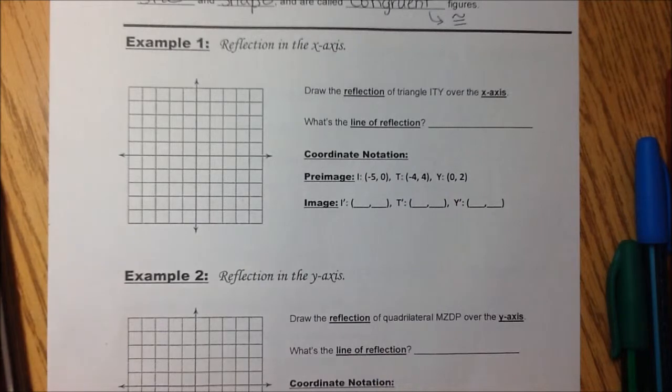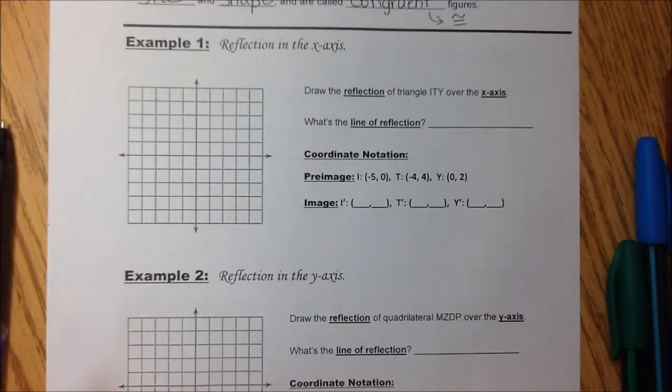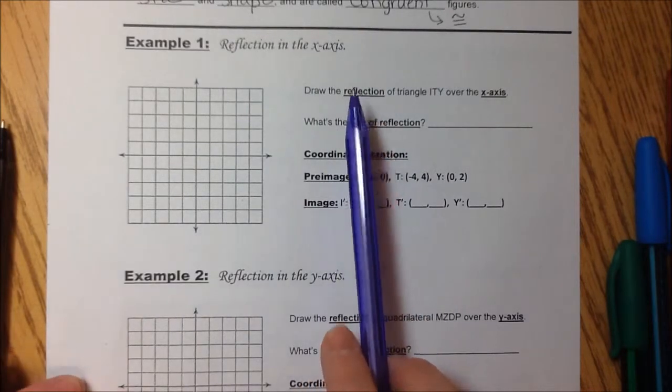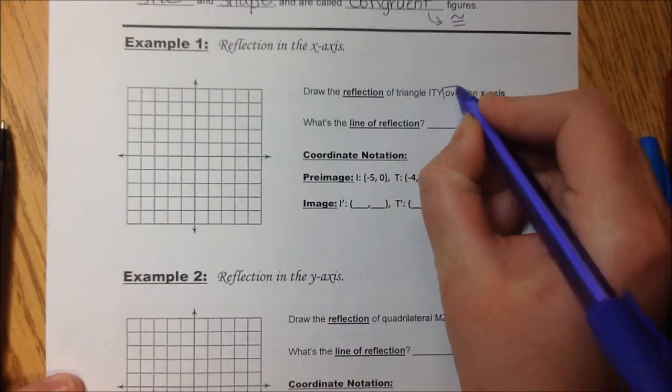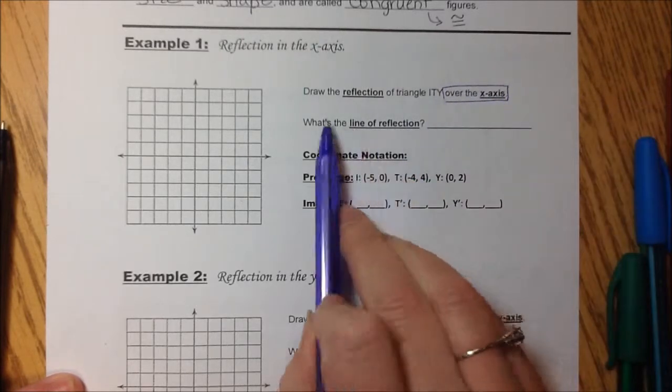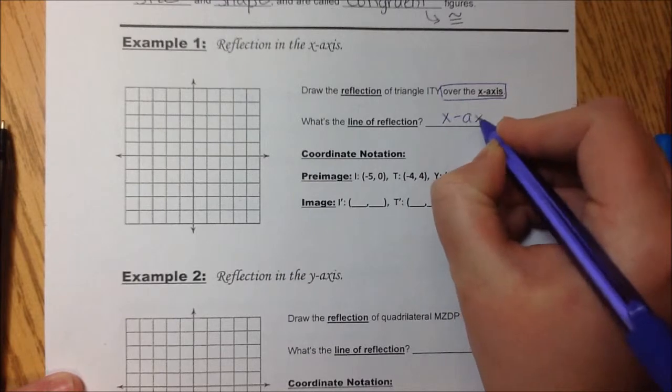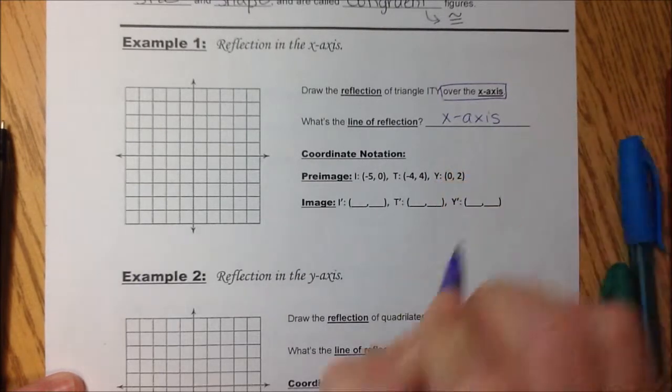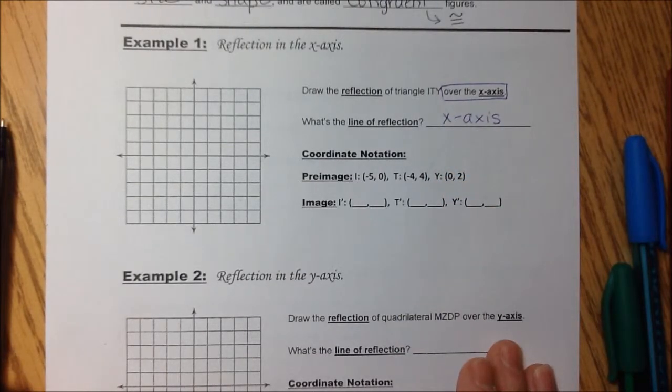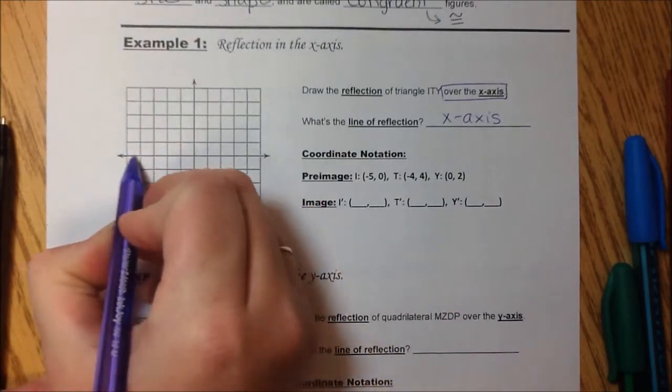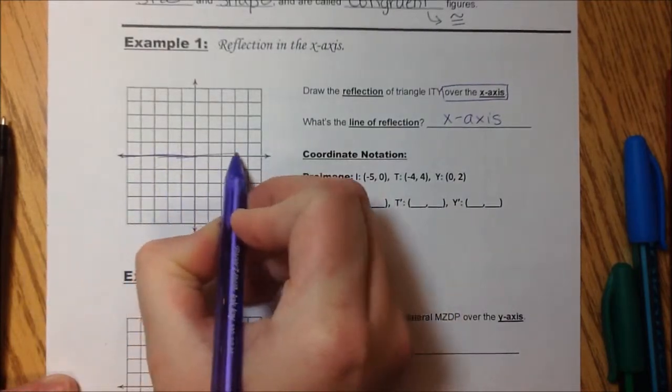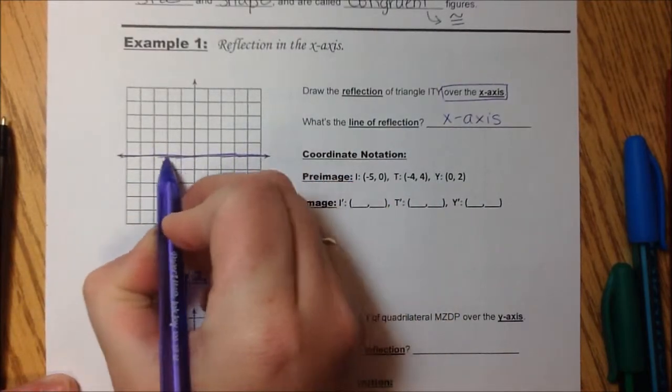Draw a reflection of the triangle ITY over the x-axis. What's the line of reflection? Okay, if we're going over the x-axis, that tells us that my line of reflection will be the x-axis. Purple. The x-axis. That's right here. X-axis. That's where we're reflecting it over.